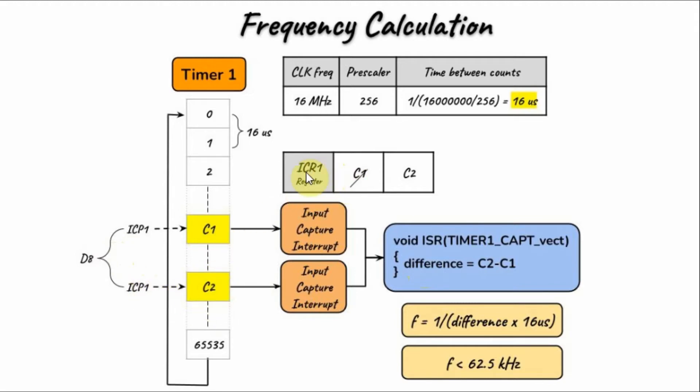When the next pulse comes in, the count value is stored in the register, the input capture interrupt is initiated, and the count value is stored and the difference is calculated. Using this difference, we can then calculate the frequency using this equation here.